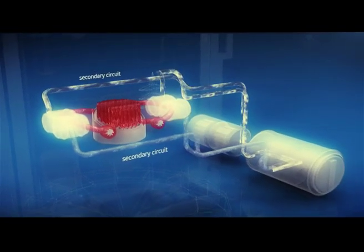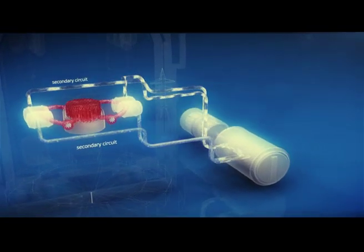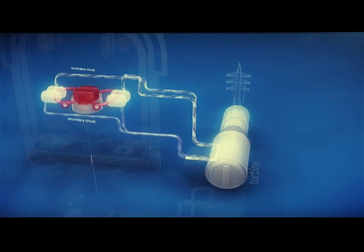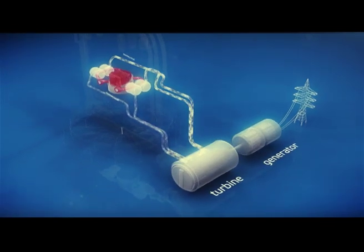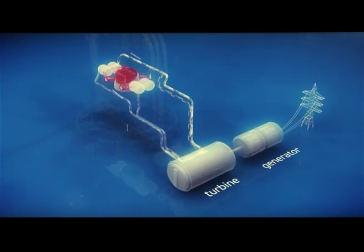Secondary water is turned into steam in the steam generator. Steam rotates the turbine, and the turbine moves the electric generator. It is the generator that produces the electric current.